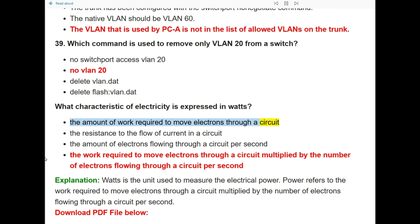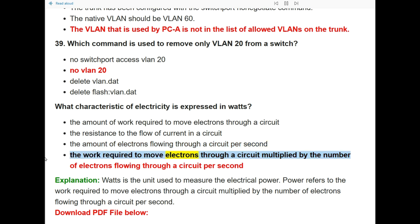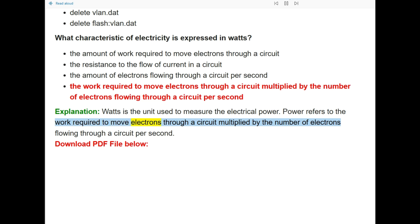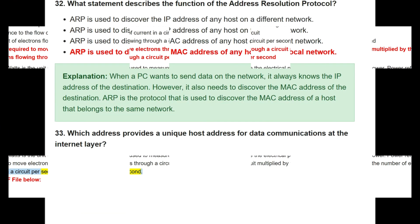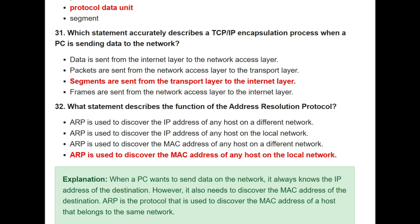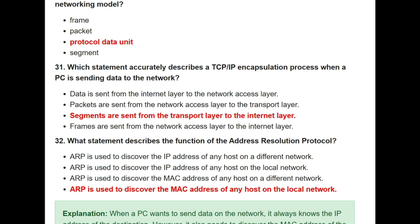Question 40: What characteristic of electricity is expressed in watts? The answer is: the work required to move electrons through a circuit multiplied by the number of electrons flowing through a circuit per second. Power refers to this measurement of electrical power.